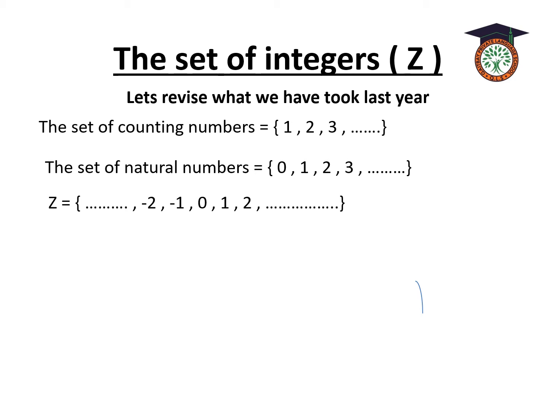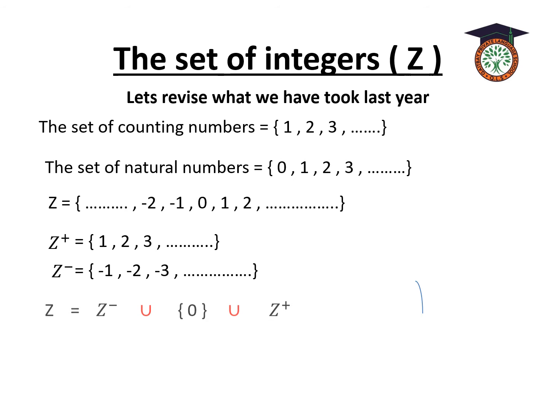What about Z? This is the set of integers, which includes the negative numbers, zero, and the positive numbers. The positive numbers are like the counting numbers: 1, 2, 3, and so on. The negative numbers include negative 1, negative 2, negative 3, and so on. So Z equals Z⁻ union {0} union Z⁺.